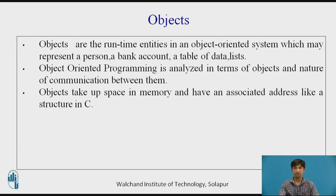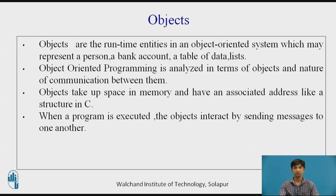Objects take up space in memory and have an associated address, like a structure in C — that is, a collection of similar data types. When a program is executed, objects interact by sending messages to one another. For example, if customer and account are two objects in a bank program, the customer object may send a message to the account object requesting the bank balance. Each object contains data and code to manipulate the data. Objects can interact without having to know details of each other's data or code — it is sufficient to know the type of message accepted and the type of response returned.